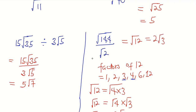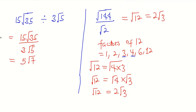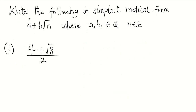Now let's get to the next type of format for division of sets. We are asked to write the following in simplest radical form a plus b square root of n, where a and b belong to the set of rational numbers and n belongs to the set of integers.